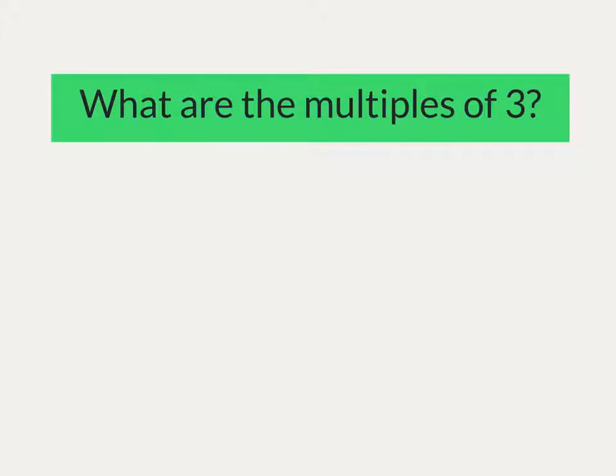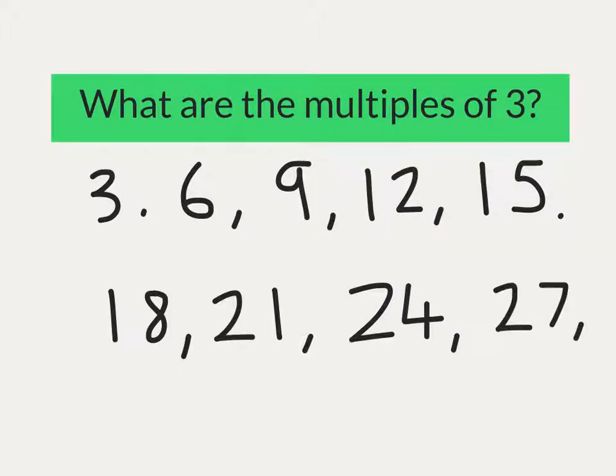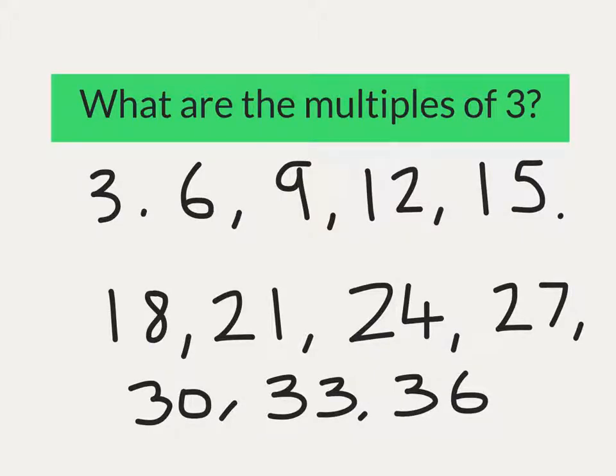So let's consider the multiples of 3. So again, we're thinking of our times tables. Well, it's also about just counting onwards. So we can see 3, 6, 9, 12, 15, 18, 21, 24, 27, 30, 33, 36. And again, I can continuously move on. Okay, but they're the multiples of 3. So I can keep on going as long as I like.